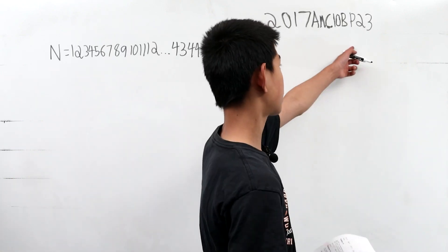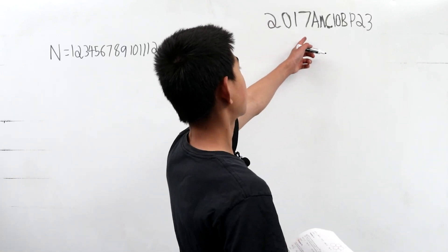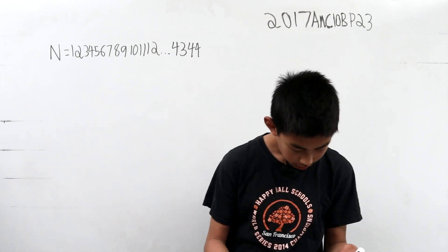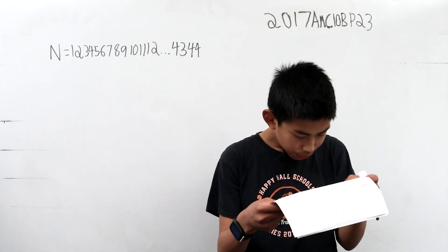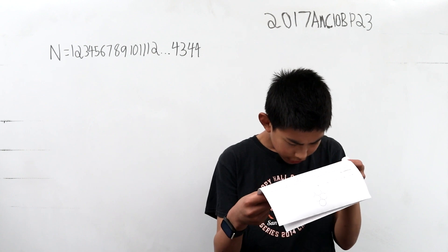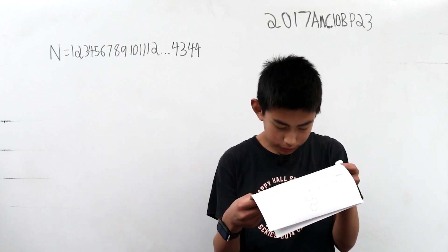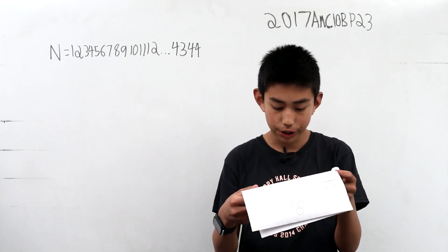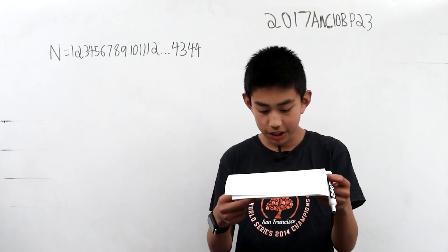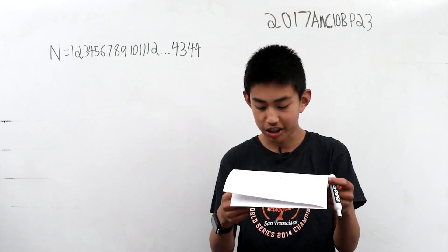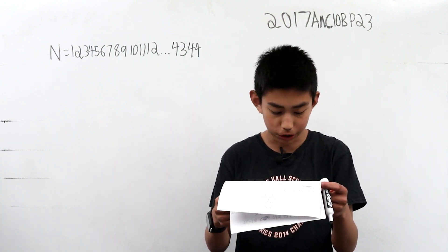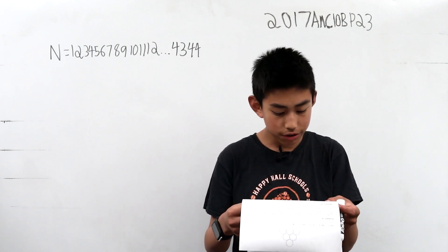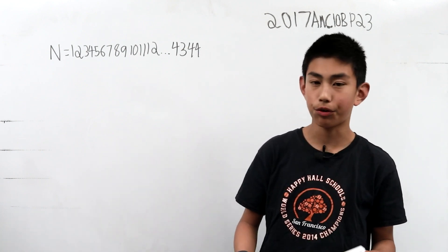We're solving problem 23 from the AMC-10B from 2017. Let n equals 1, 2, 3, 4, 5, 6, 7, 8, 9, 10, 11, 12, dot dot dot 4344 be the 79-digit number that is formed by writing the integers from 1 to 44 in order, one after the other. What is the remainder when n is divided by 45?